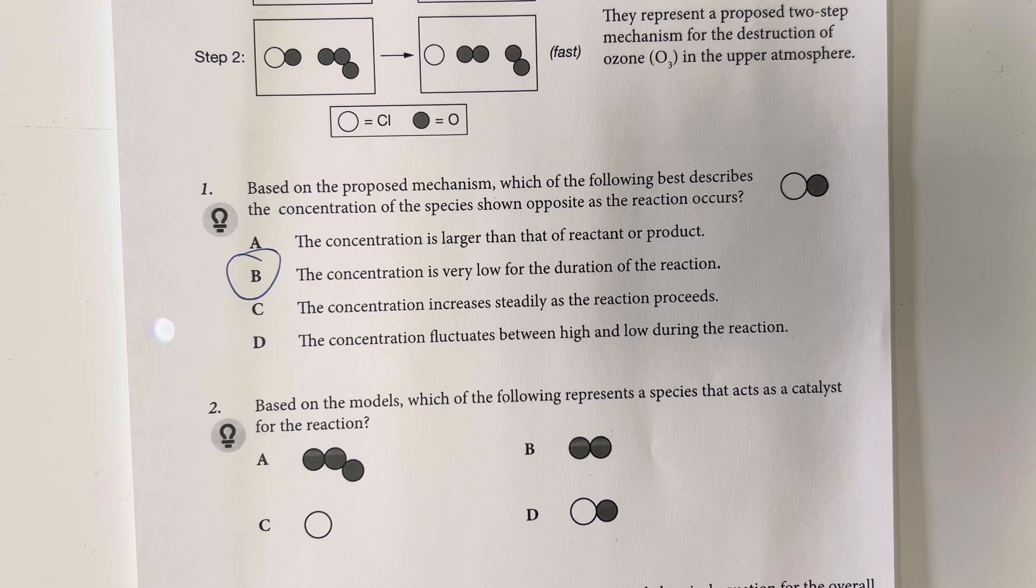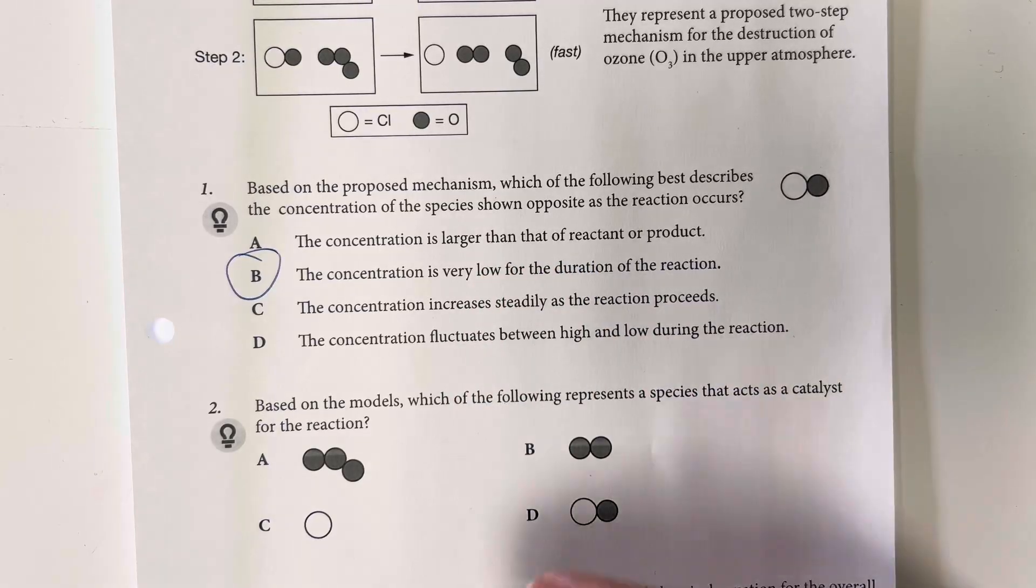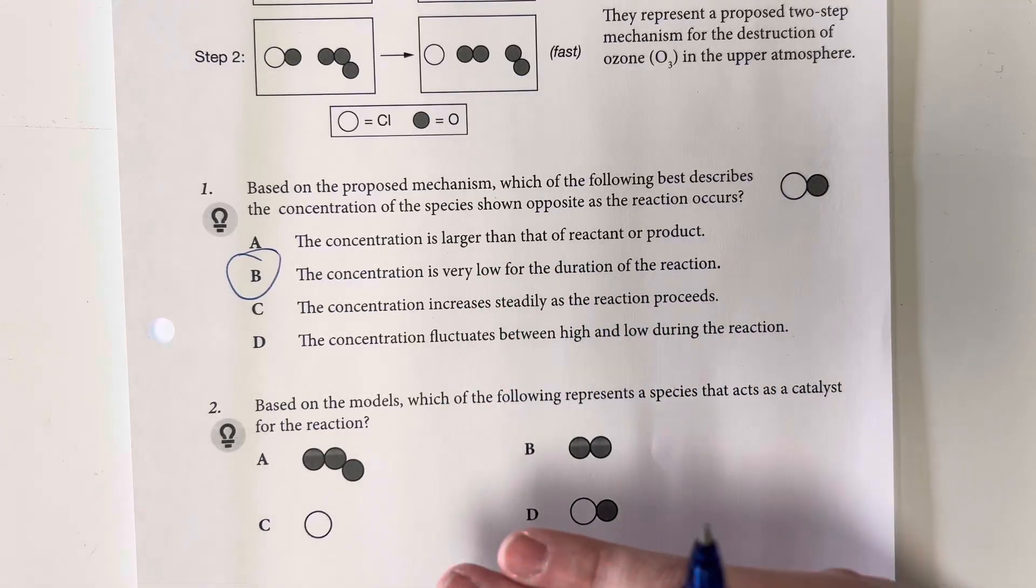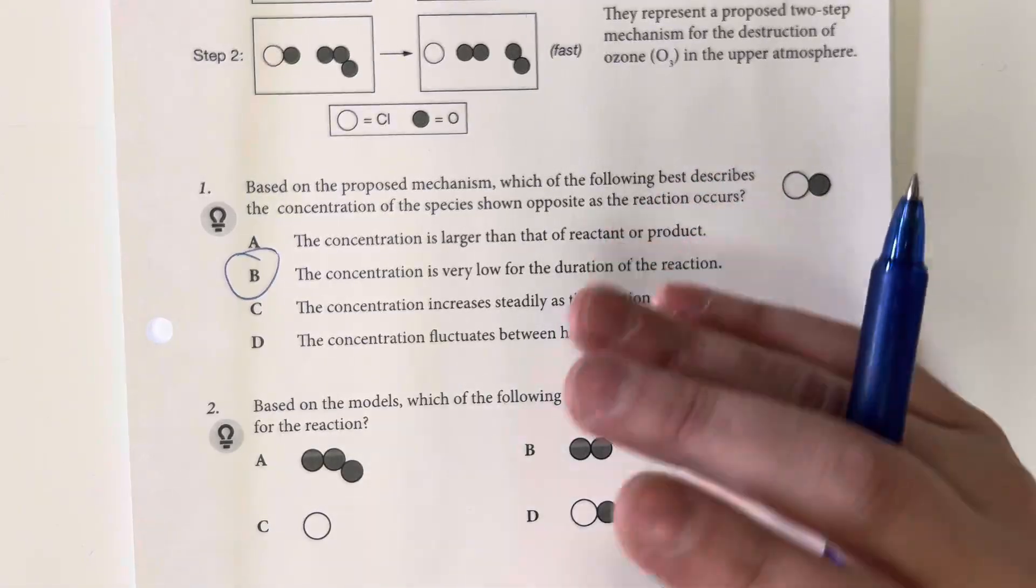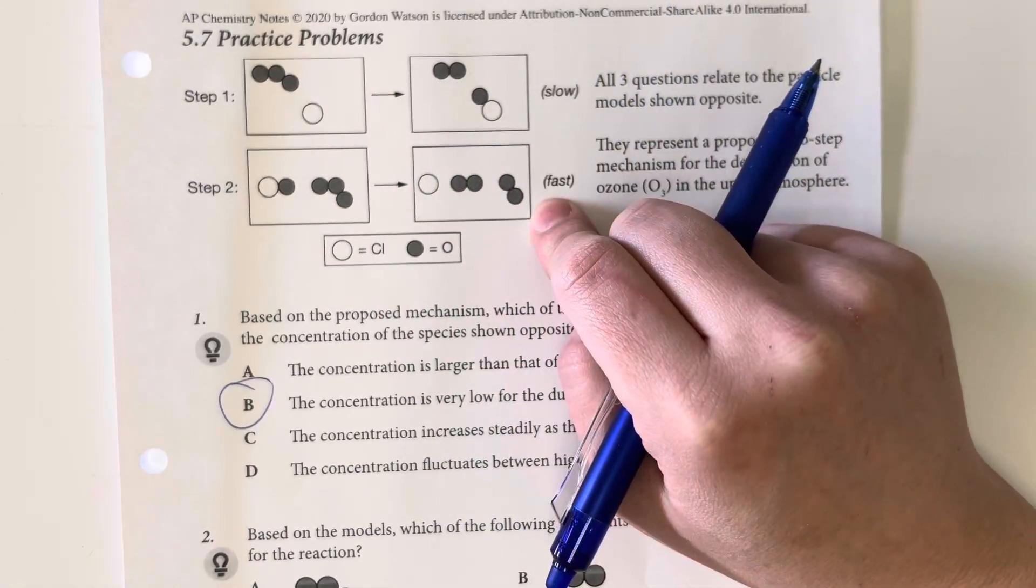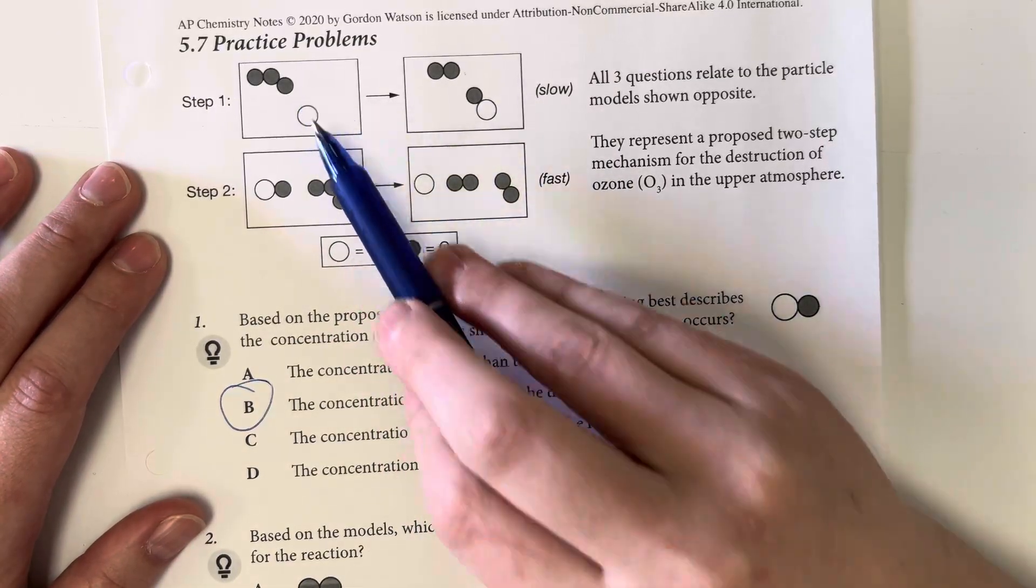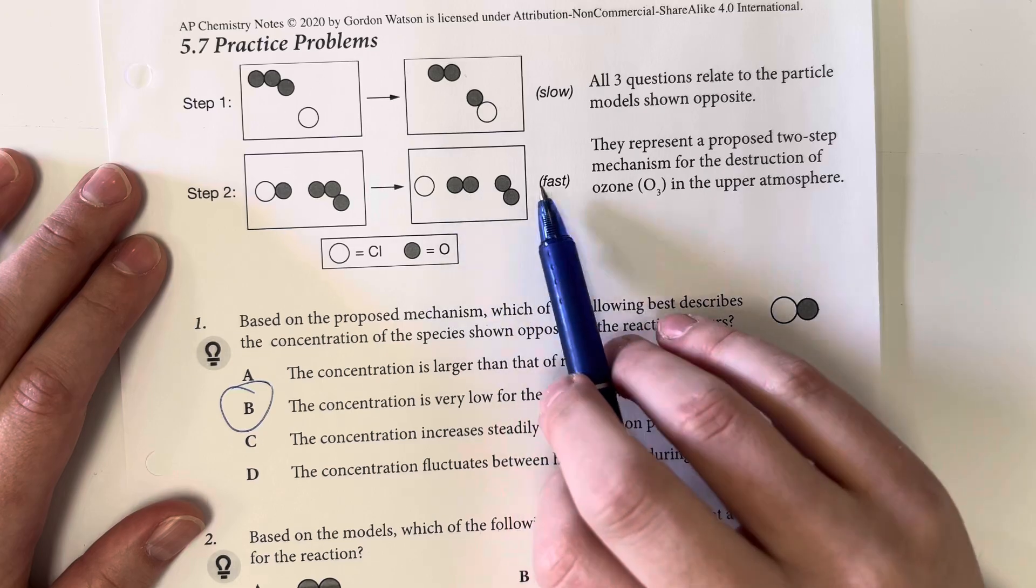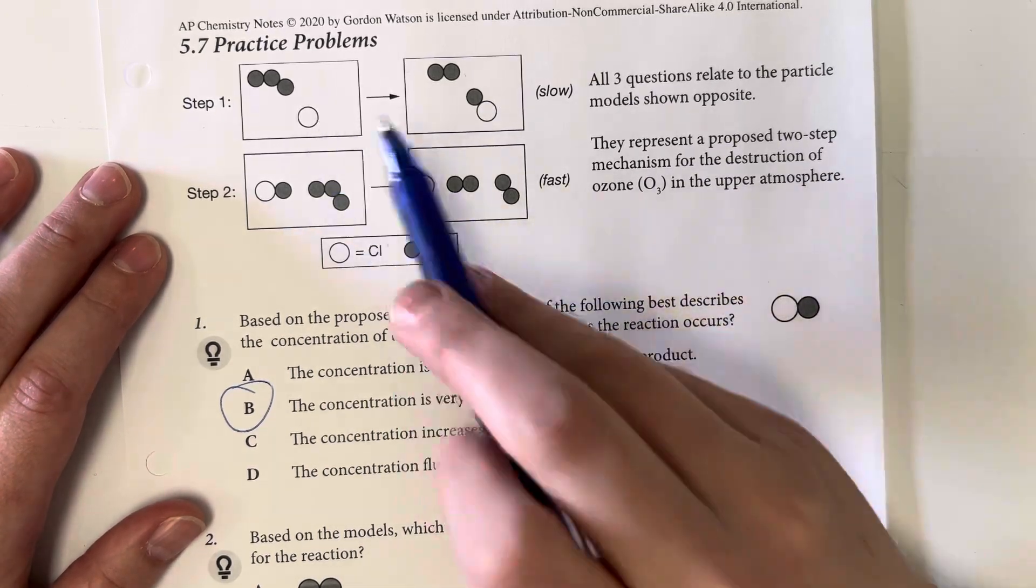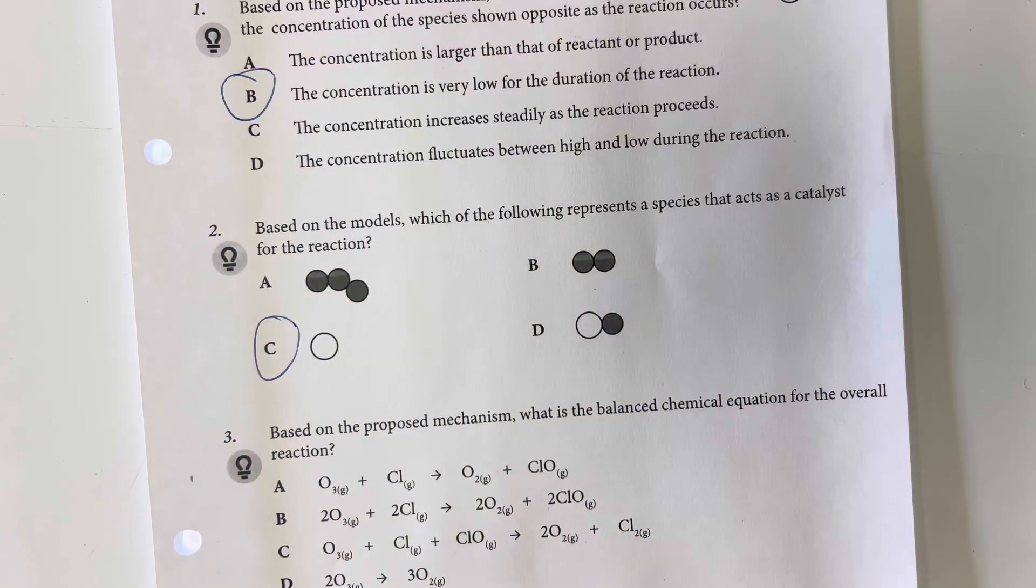Based on the models, which of the following represents the species that acts as a catalyst for the reaction? So catalysts are going to be things that appear at the beginning and at the end, and so basically they are not changed throughout the entire reaction. And so I'm going to look back at my reactants, and I'm going to see that initially I have chlorine and ozone, and then at the very end I have chlorine and oxygen here. Chlorine remains unchanged, so it would be our catalyst. It's unchanged throughout the reaction.